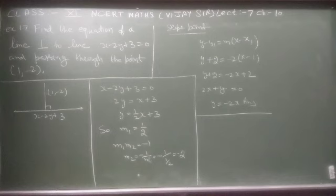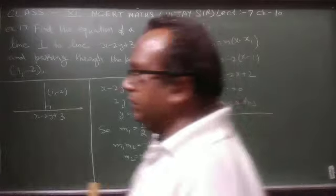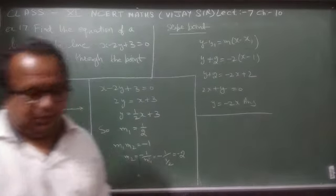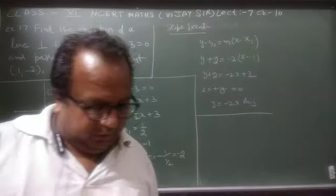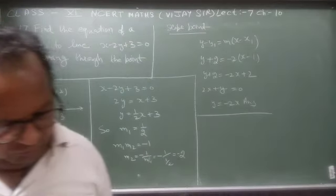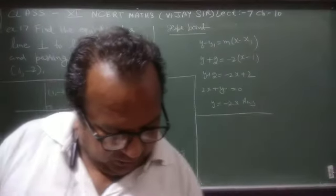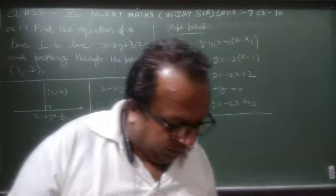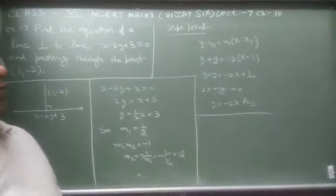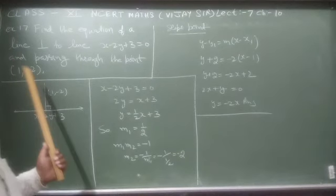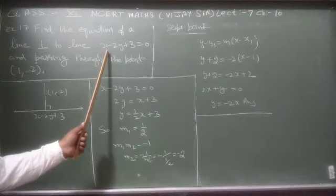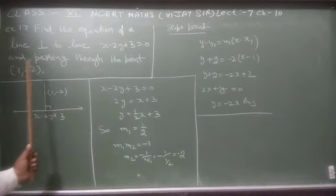Example 17: Find the equation of a line perpendicular to the line x - 2y + 3 = 0 and passing through the point (1, -2). हमने उस line की equation find करनी है जो इस line पर perpendicular भी हो और इस point से pass हो।